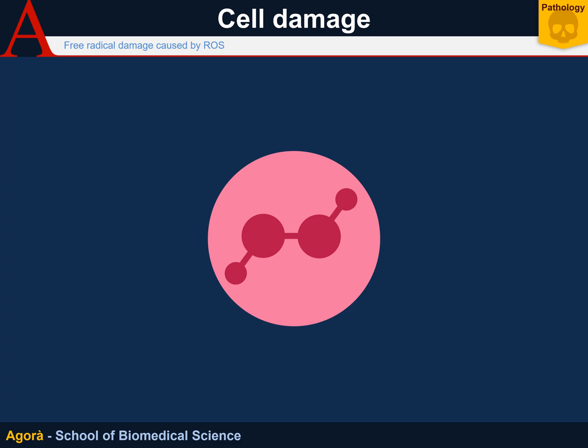Radicals are molecules with an unpaired electron in the outermost orbital, and they are extremely reactive. Among the most common radicals in the human body, we can find the hydroxyl ion, which has one oxygen molecule with an unpaired electron; the superoxide ion, which presents an extra electron delocalized on both atoms; and the hypochlorite ion, one of the most potent radicals, which has a chloride and an oxygen with a negative charge, and which is extremely used by the immune system to destroy pathogens.